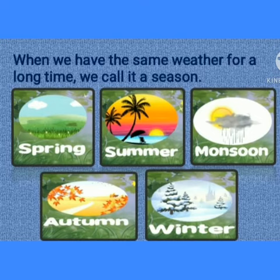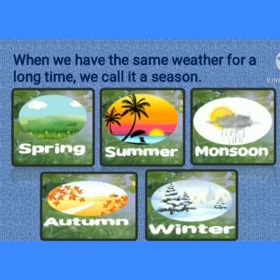In India, there are five main seasons and their names are spring, summer, monsoon, autumn, and winter.